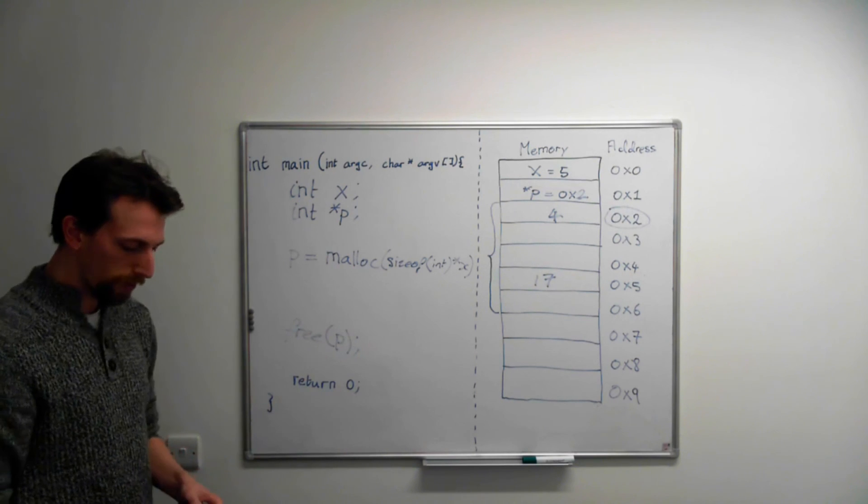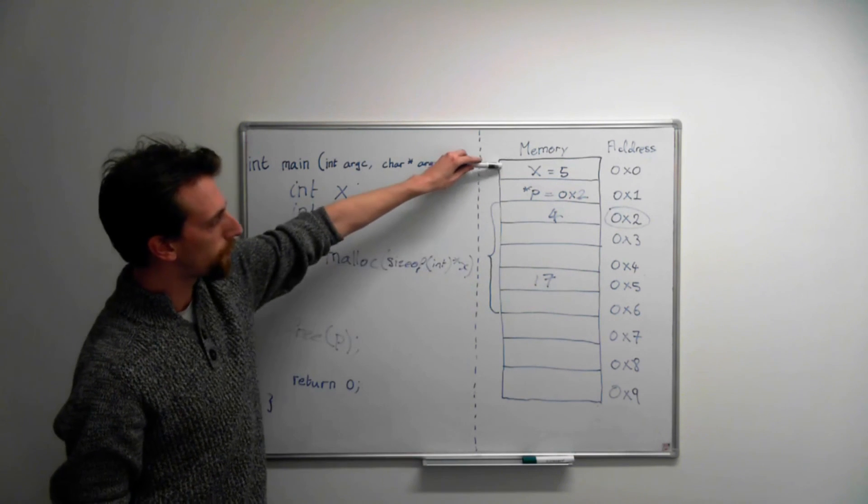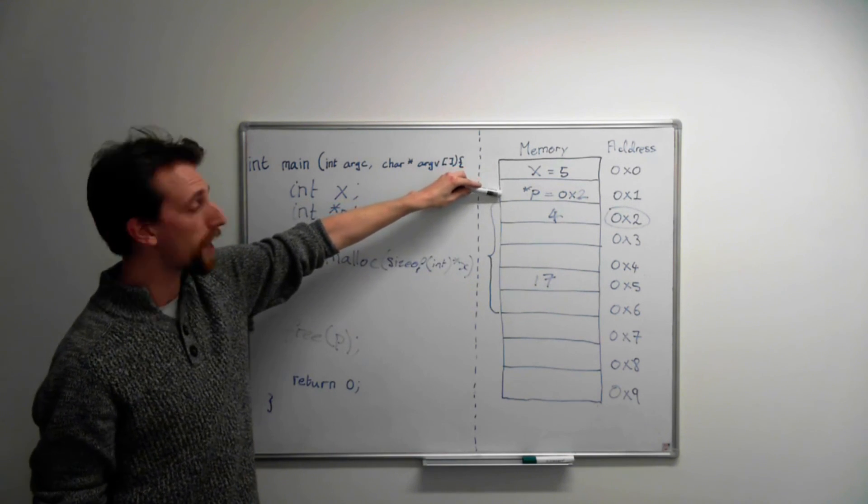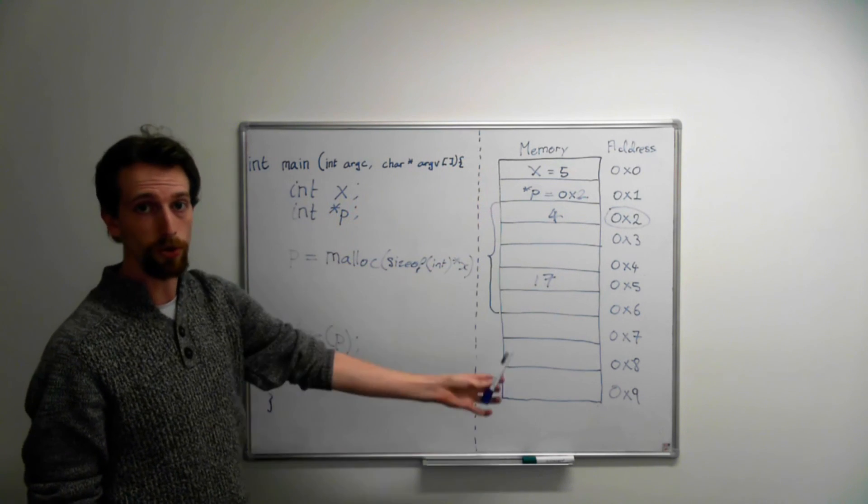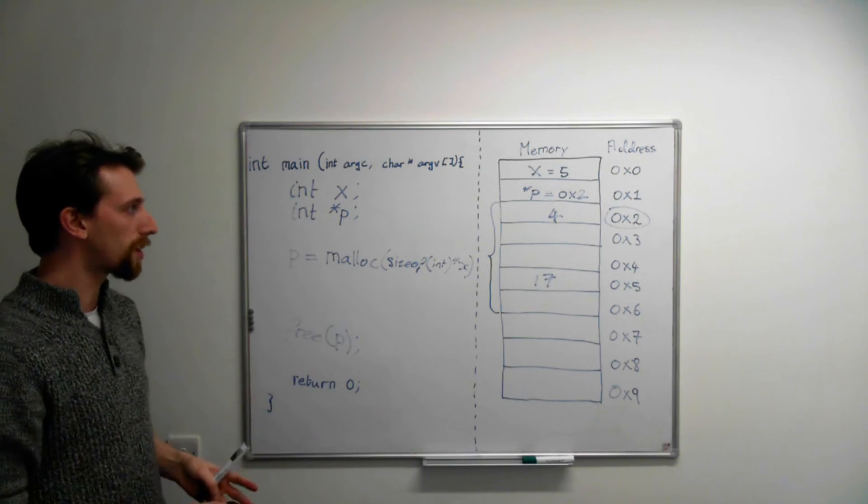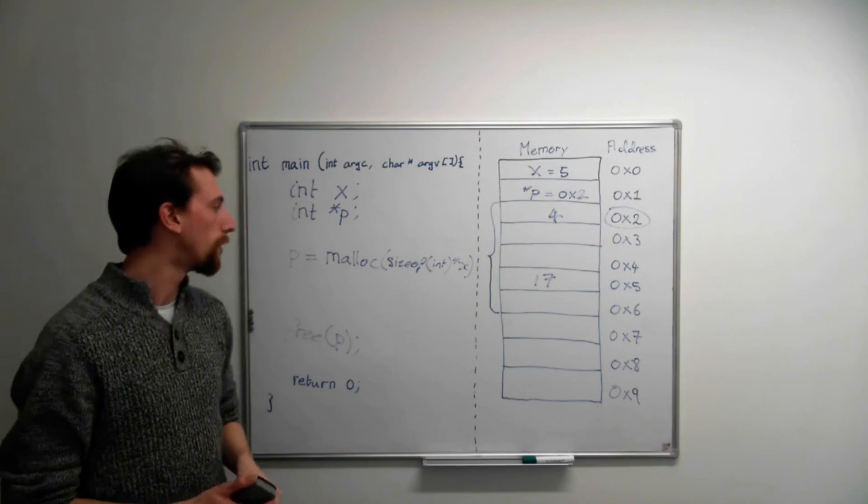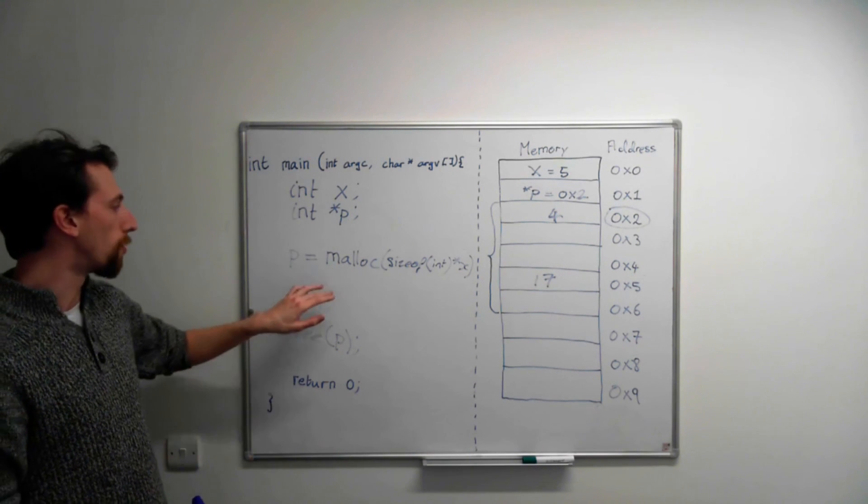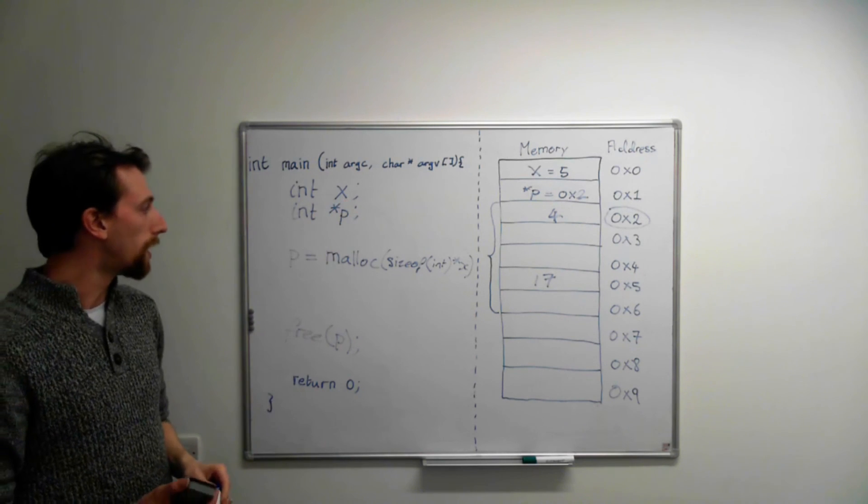Now, truthfully, this is the very accurate model of how memory works. Typically, these values get allocated on a thing called the stack. And these values get allocated on a thing called the heap, which grows from a different direction. But for the purposes of this trivial example of what a pointer is, this will work. And if you keep this model in your head when you're allocating memory, when you're manipulating memory, or when you're storing an address to a variable, you should be okay, at least for beginner programs.